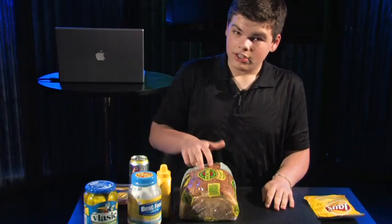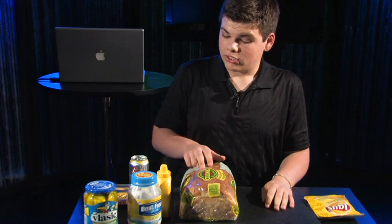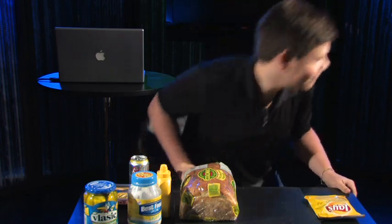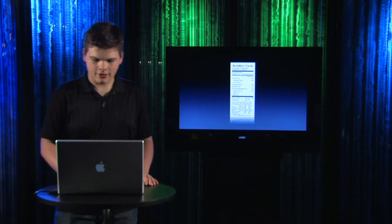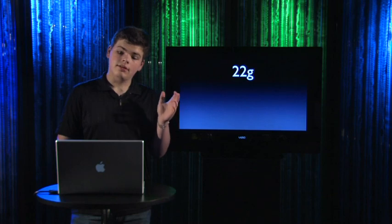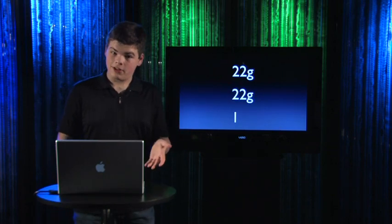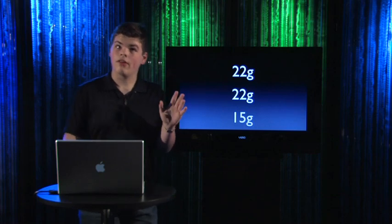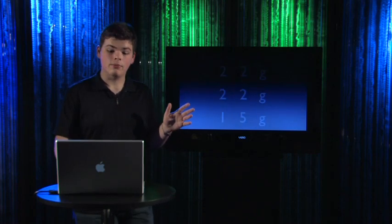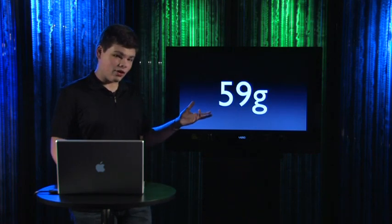So we have 22 grams for each slice of bread and 15 grams for the chips. Let's add that up. We had two slices of bread at 22 grams each — so 22 plus 22 — plus a bag of chips at 15 grams. Adding all that up, that would be 59 grams of carbohydrate.